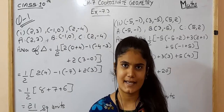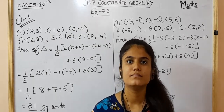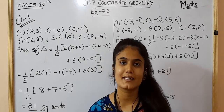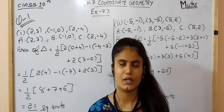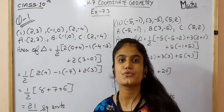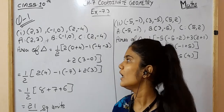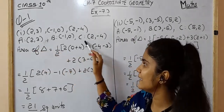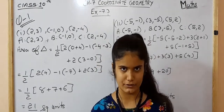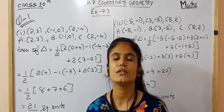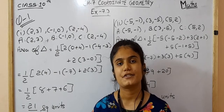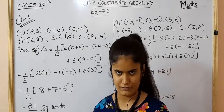Now starting exercise 7.3. In question number 1, we are told to find the area of a triangle using the vertices and coordinates given in the question. The three vertices and coordinates of a triangle are given, and we use the formula learned in the introduction: 1/2 into X1(Y2 − Y3) + X2(Y3 − Y1) + X3(Y1 − Y2).